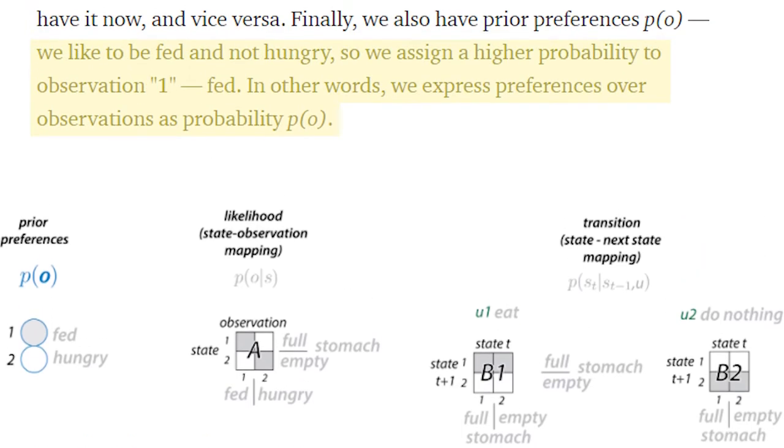We like to be fed and not hungry, so we assign a higher probability to observation one, fed. In other words, we express preferences over observations as probability p of o.